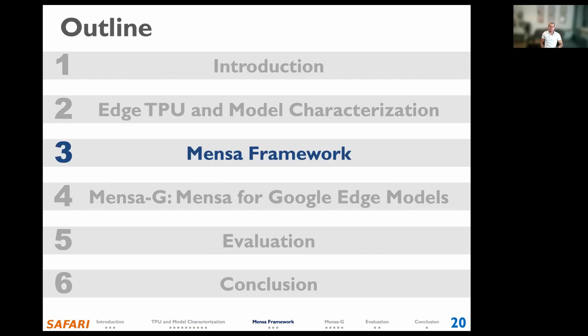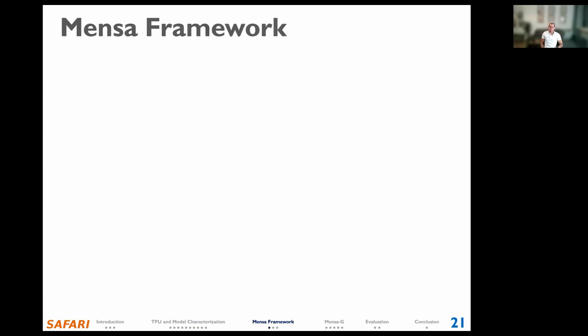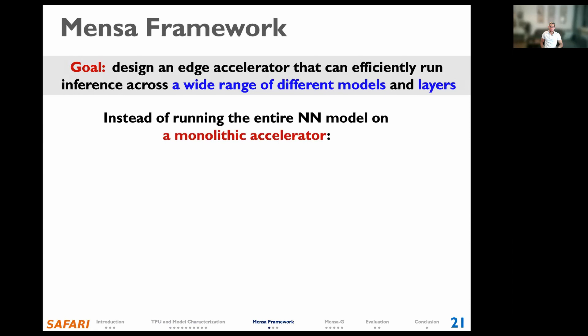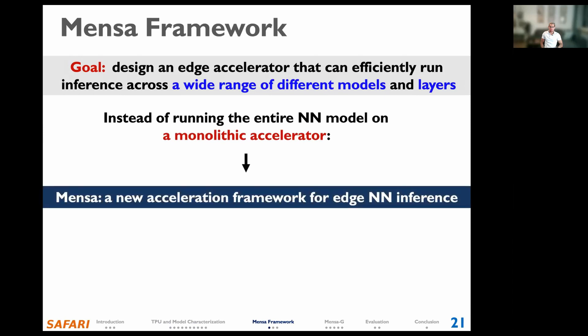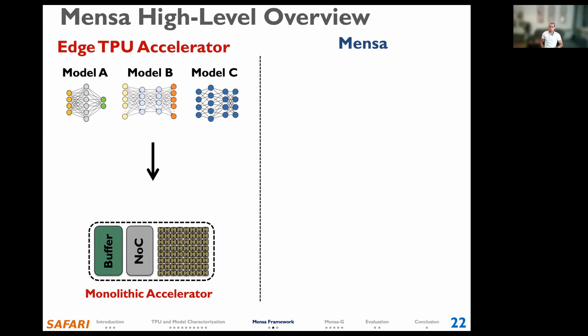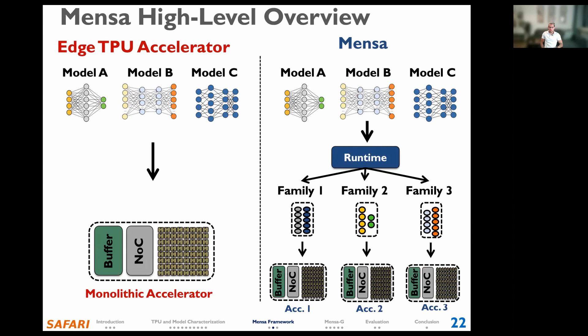Next, I will describe our proposal to cope with this issue. Based on our analysis, the goal of our work is to design an edge neural network accelerator that can efficiently run inference across a varying number of different models and layers. Instead of designing a one-size-fits-all monolithic accelerator, we propose MENSA, a new accelerator framework for neural network inference. In the baseline system, different machine learning models execute on a single monolithic edge accelerator, leading to performance and energy issues. MENSA instead distributes layers from a neural network model using a runtime scheduler across a collection of smaller hardware accelerators catered to the properties of different layer types, resulting in a highly efficient, high-performance system with a much smaller area.